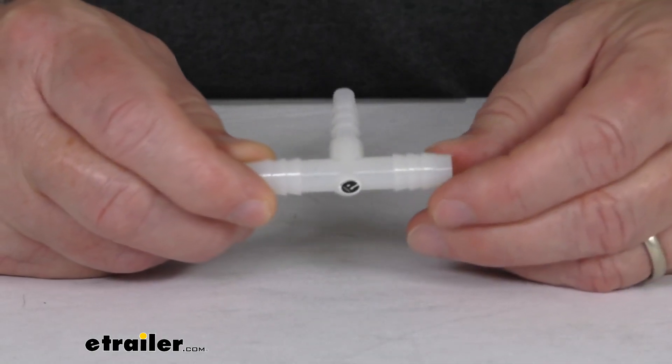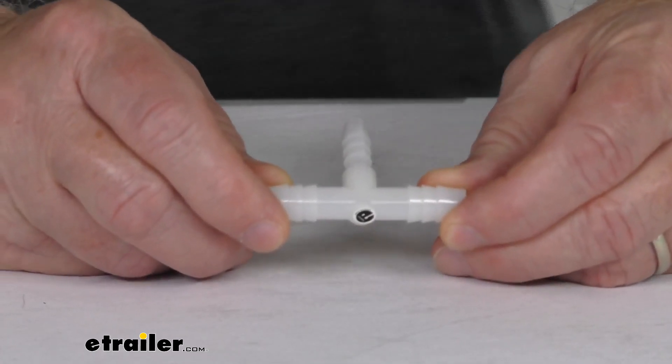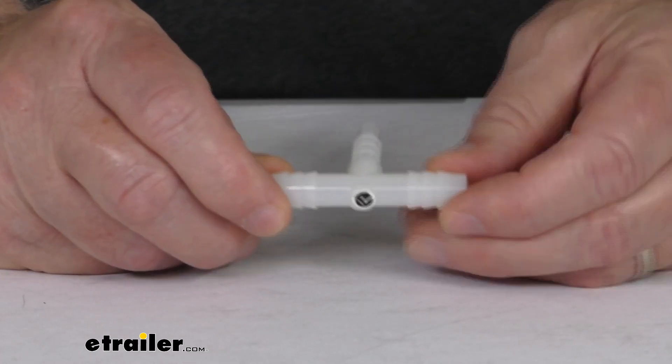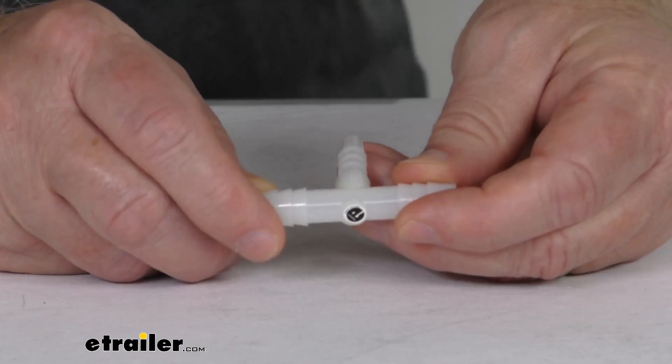This part is designed to replace the vacuum line T on your Roadmaster Invisibrake second vehicle kit. That kit we sell separately on our website. It's part number RM-98700.